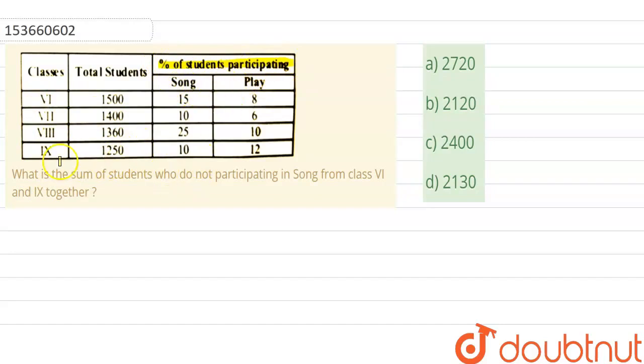So let's look at the question. What is the sum of students who do not participate? The data given is the number of students who participate in song, but the question asks about those not participating. We will focus on class 6th and class 9th. Let's mark where class 6 and class 9 are.